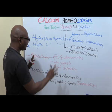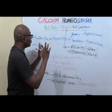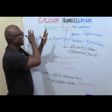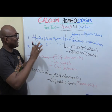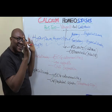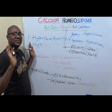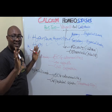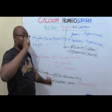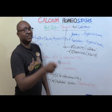So basically, that's just what you need to know about calcium homeostasis — parathyroid hormone, vitamin D, and calcitonin. See you in the next video.